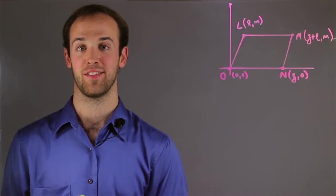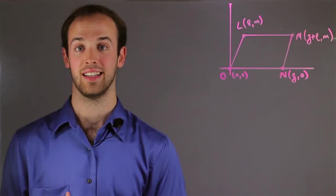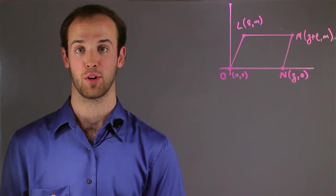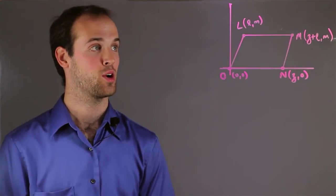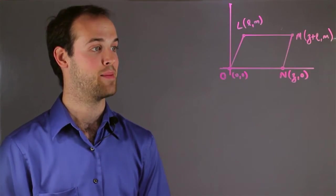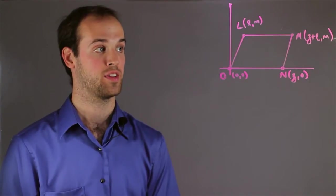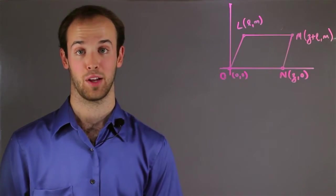Coordinate proofs have been given variables for coordinates instead of numerical values, but we're still required to prove something about the graph. So here we have quadrilateral LMNO, and we're required to prove that this quadrilateral is a parallelogram.